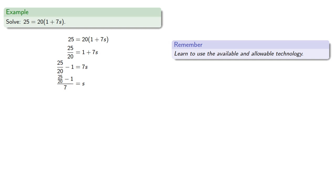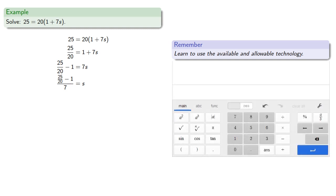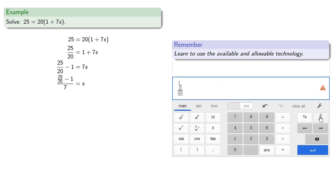Most modern scientific calculators allow you to input something that looks exactly like standard math notation. Using the simple interest formula, we find our interest rate is approximately 0.03571.